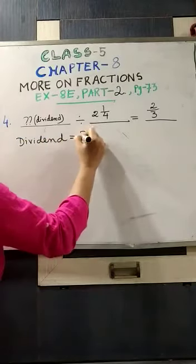10 tens are there in 100. As if you multiply 10 by 10, you will get 100. That means 10 tens are there in 100. So, this way, in the same way, how many one-fourths are there in 3?